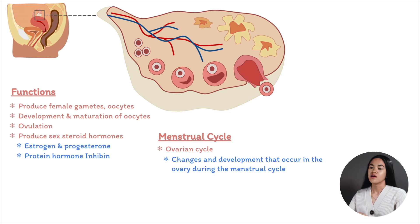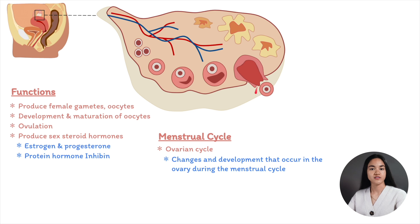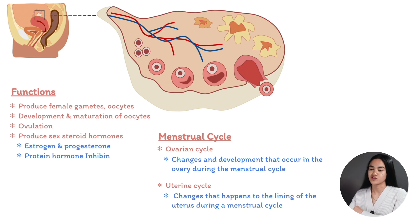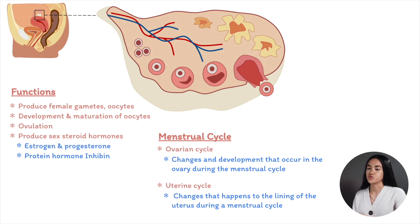Oocytes are housed in structures known as follicles. In the ovulation lecture we'll cover how follicles develop from primordial follicles into mature follicles, how ovulation occurs, and how the corpus luteum develops. The uterine cycle describes a series of changes to the lining of the uterus during the menstrual cycle. The menstrual cycle is controlled by the endocrine system and divided into three phases: the follicular phase, ovulation, and the luteal phase.